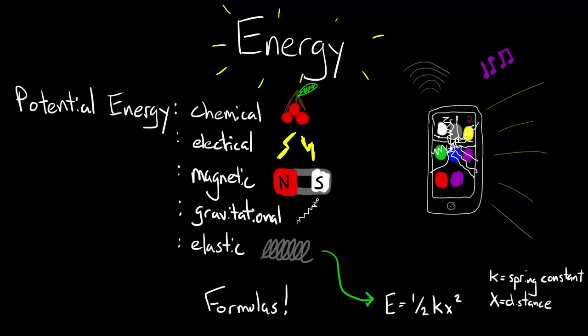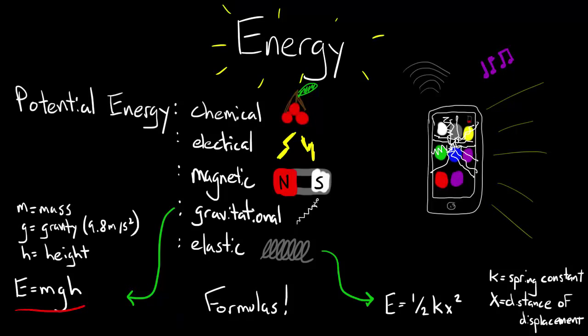And x is the distance of spring displacement. Gravitational potential energy is given as E equals mgh, where m is the mass of an object, little g is the gravity of Earth, or about 9.8 meters per second squared, and h is the height of the object in question.